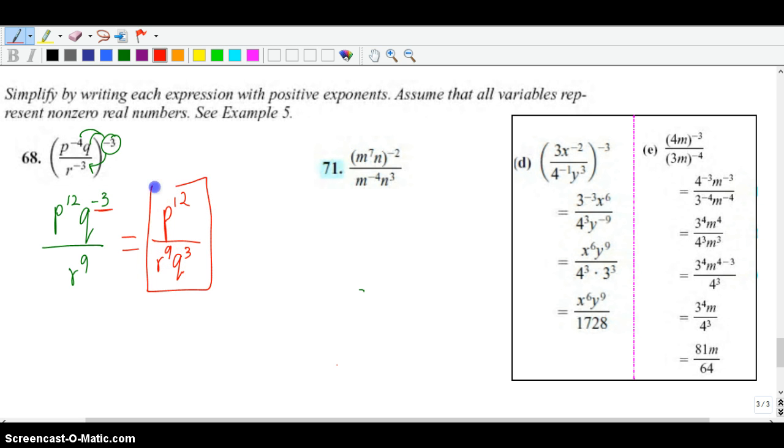If you were to put the q to the 3rd in front, it actually doesn't make a difference. Because multiplication, 2 times 3 is the same thing as 3 times 2. So order doesn't matter. So that one was like d if you want to look at that example also to have a second look at how to work a problem like that.